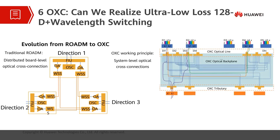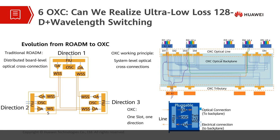OXC uses the system-level optical cross-connection to solidify fiber connections in different directions on the optical backplane. This can simplify the fiber connection. The optical backplane connects the optical tributary boards and optical line boards. All the modules in one direction on the line side are integrated into the same optical line board. The optical wavelength add and drop services are transmitted to the OXC through the optical tributary board and are groomed to the optical line boards in each direction.